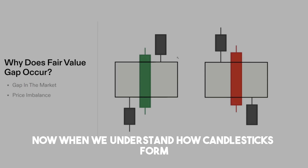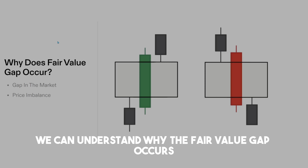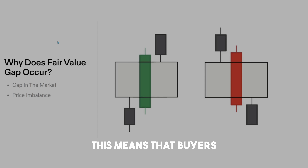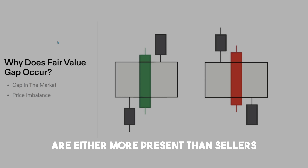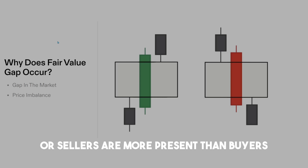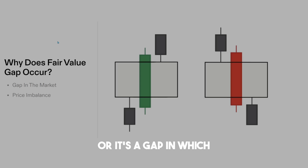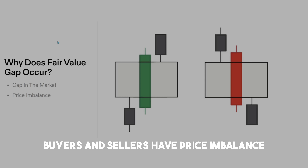When we understand how candlesticks form, we can understand why the fair value gap occurs. The fair value gap occurs when there's a gap in the market or a price imbalance. This means that buyers are either more present than sellers or sellers are more present than buyers. The fair value gap is a range or a gap in which buyers and sellers have a price imbalance.